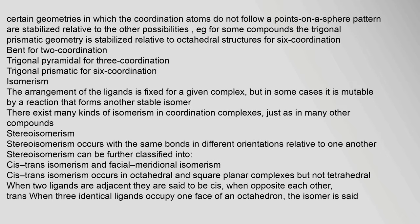Due to special electronic effects such as second-order Jahn-Teller stabilization, certain geometries in which the coordination atoms do not follow a points-on-a-sphere pattern are stabilized relative to other possibilities. For example, for some compounds the trigonal prismatic geometry is stabilized relative to octahedral structures for 6-coordination. The arrangement of the ligands is fixed for a given complex, but in some cases it is mutable by a reaction that forms another stable isomer. There exist many kinds of isomerism in coordination complexes, just as in many other compounds.